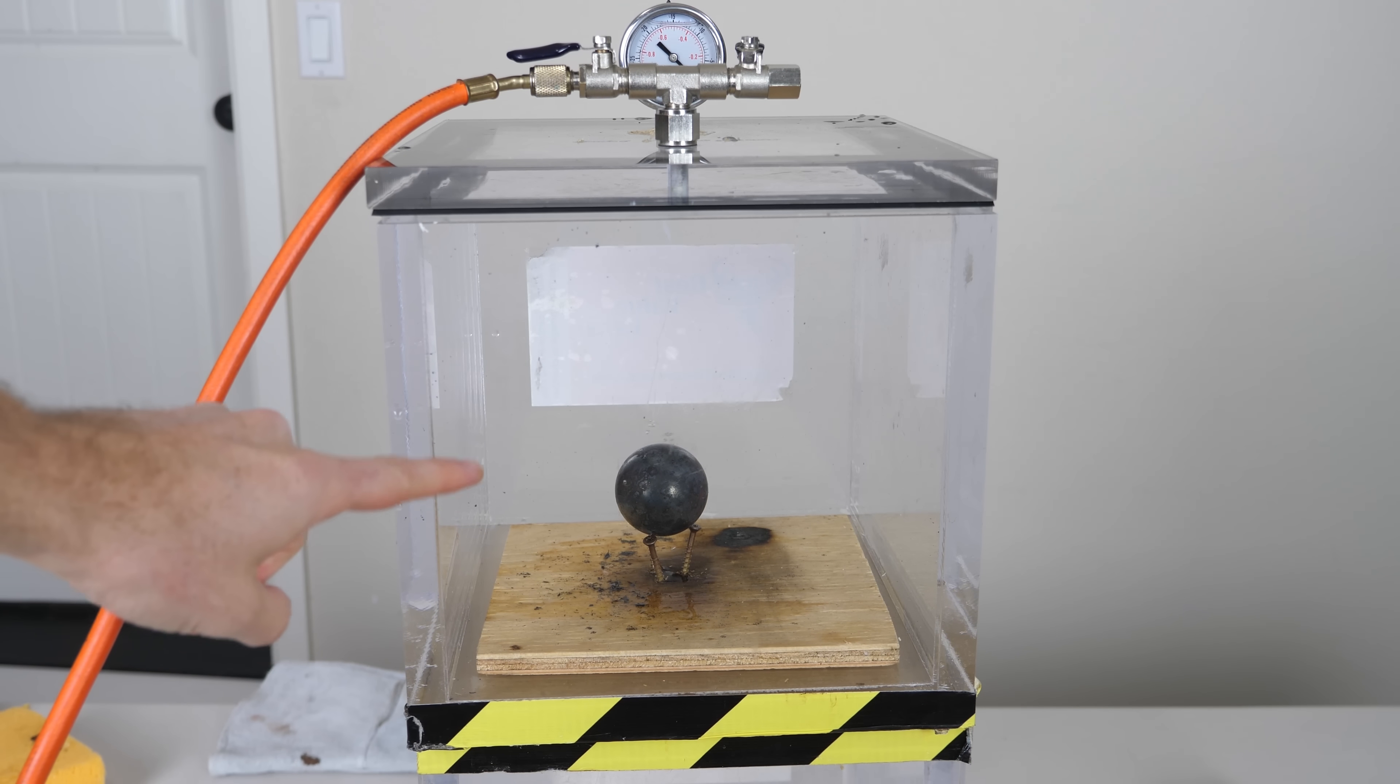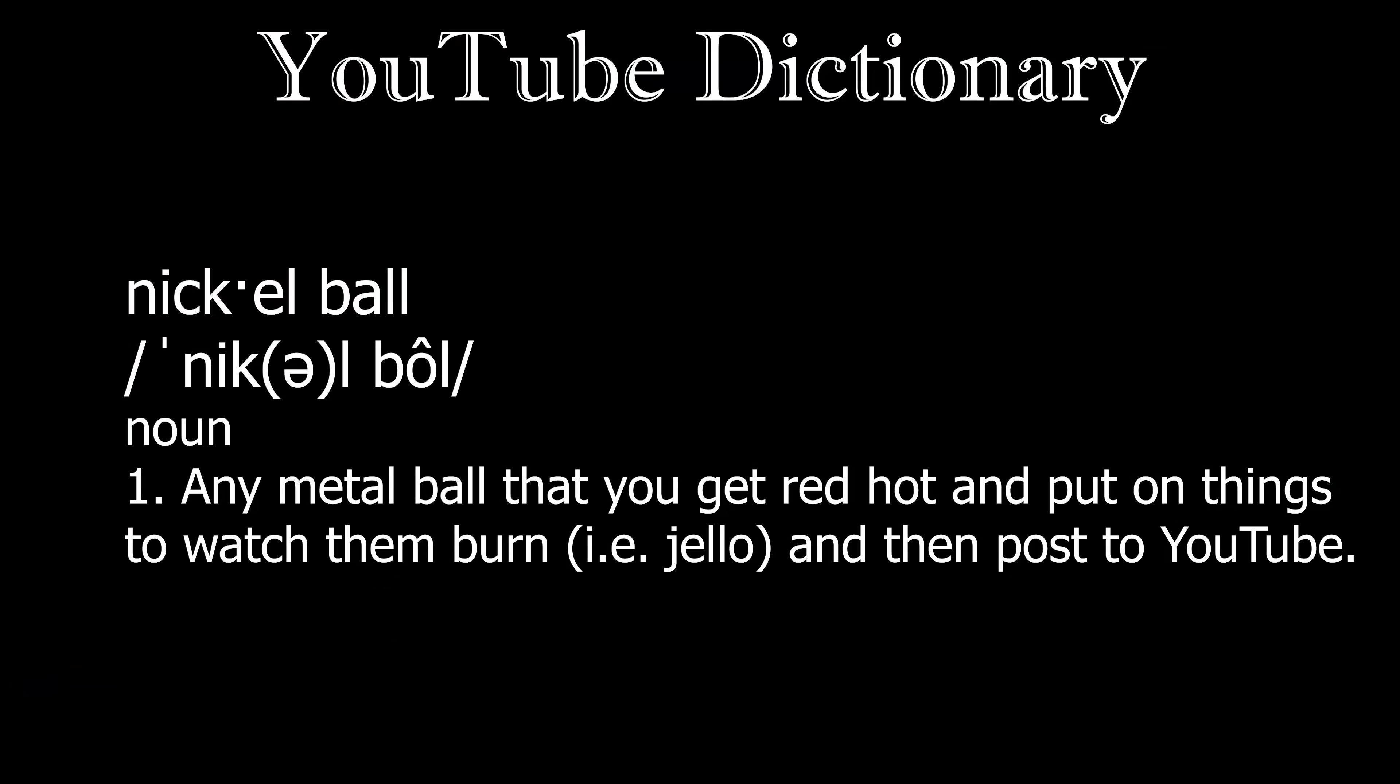So I have here a two inch diameter nickel ball, well actually it's a steel ball, but I looked in the YouTube dictionary and any shiny metal ball that you heat up to a thousand degrees is by definition a red hot nickel ball, RHNB.